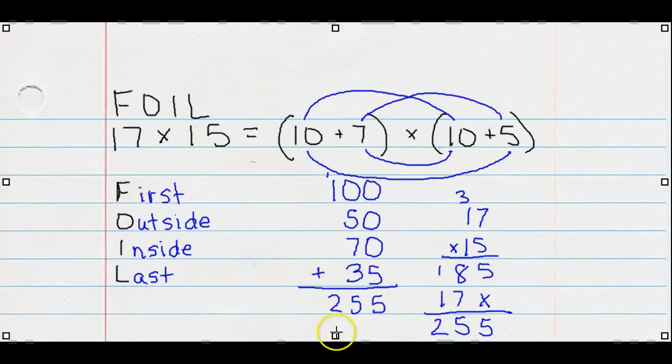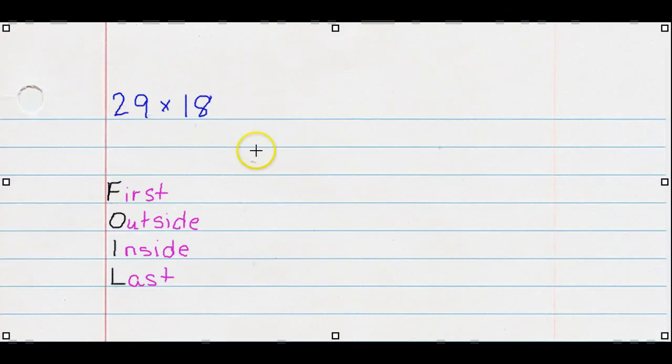Now let's do another example. Okay. 29 times 18. First, we put them in expanded notation. 20 plus 9 times 10 plus 8.